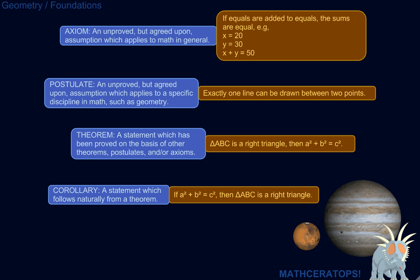All that to say, what's the point of learning what an axiom or a postulate or a theorem or a corollary is in geometry? Well, these are kind of the rules or the framework — the boundary lines of the field — which allow the game of geometry to happen. So without these rules, it'd be kind of mayhem. Geometry really wouldn't mean anything.